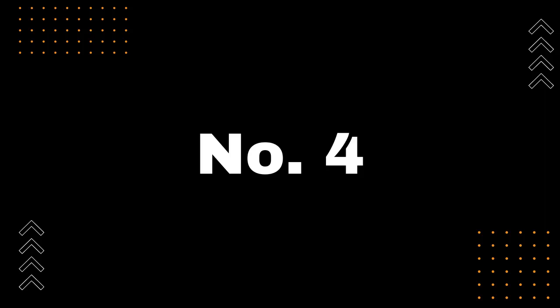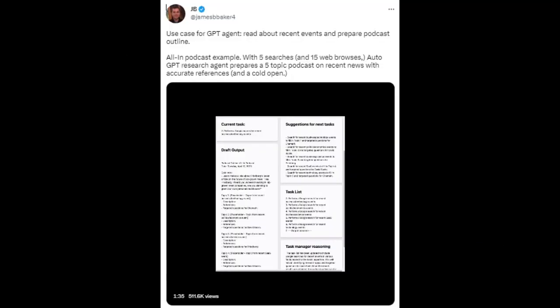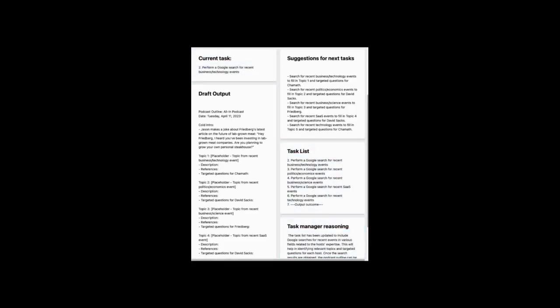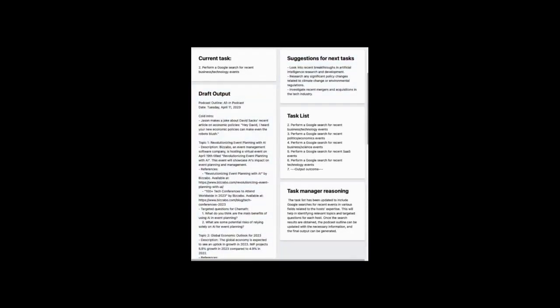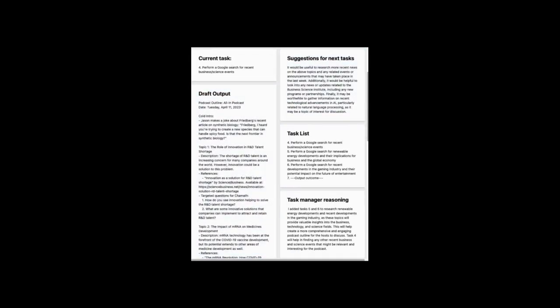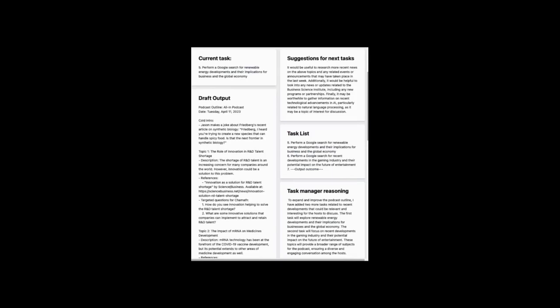For our fourth example of how to use AutoGPT, let's explore how it can help you prepare your podcast outline. James B. Baker has utilized the latest AutoGPT project based on BabyAGI architecture to streamline the process of researching and preparing podcast outlines. With this tool, you can efficiently create engaging podcasts on recent news, complete with accurate references. With just five searches and 15 web browsing actions, AutoGPT's research agent can prepare a five-topic podcast outline that's ready to go. To learn more, make sure to follow James B. Baker.